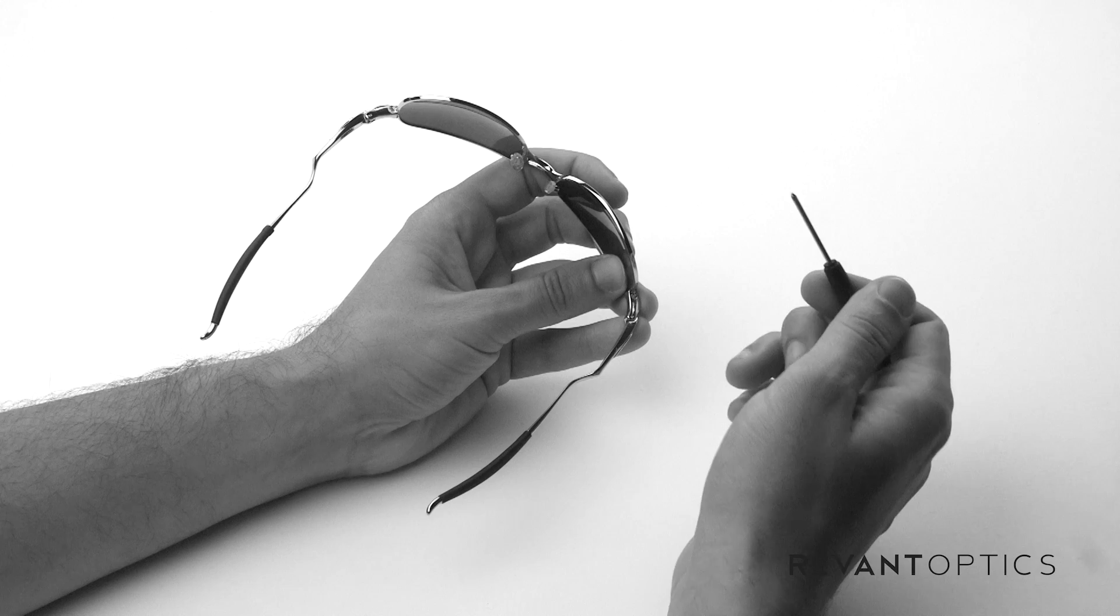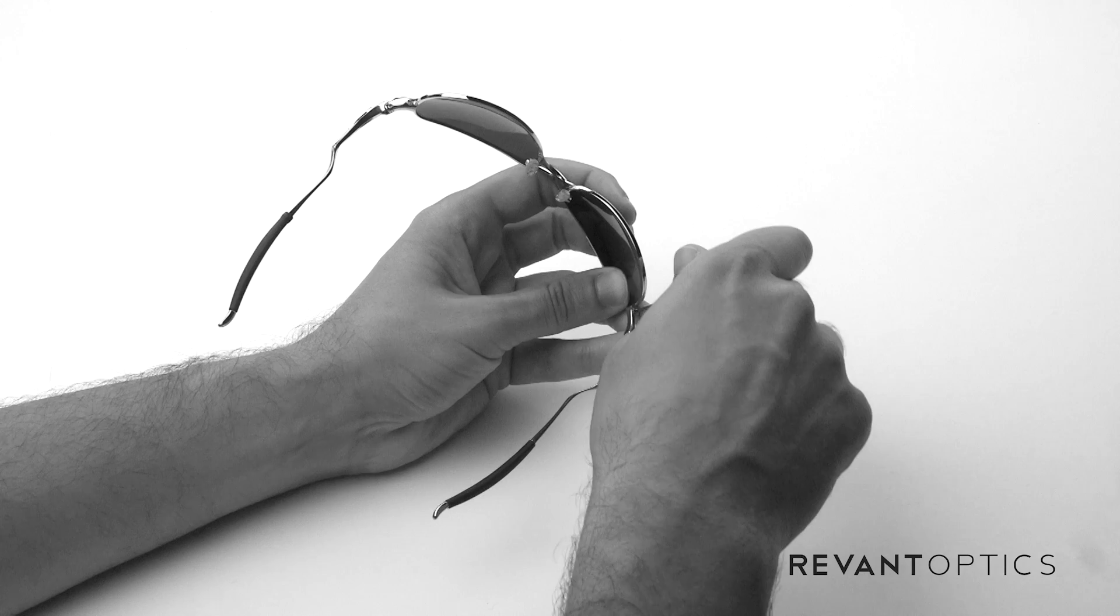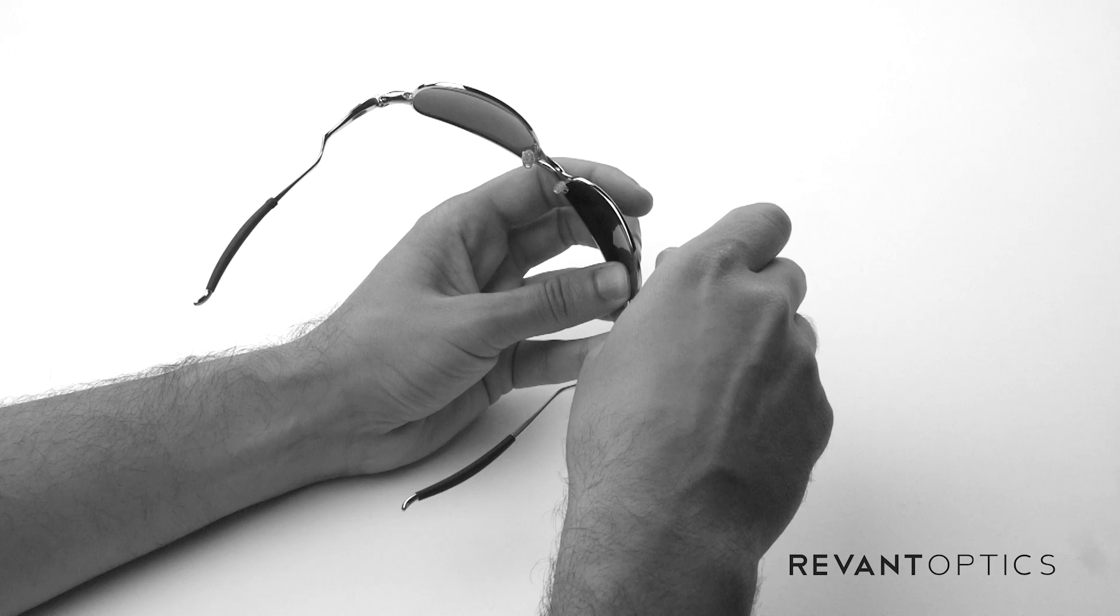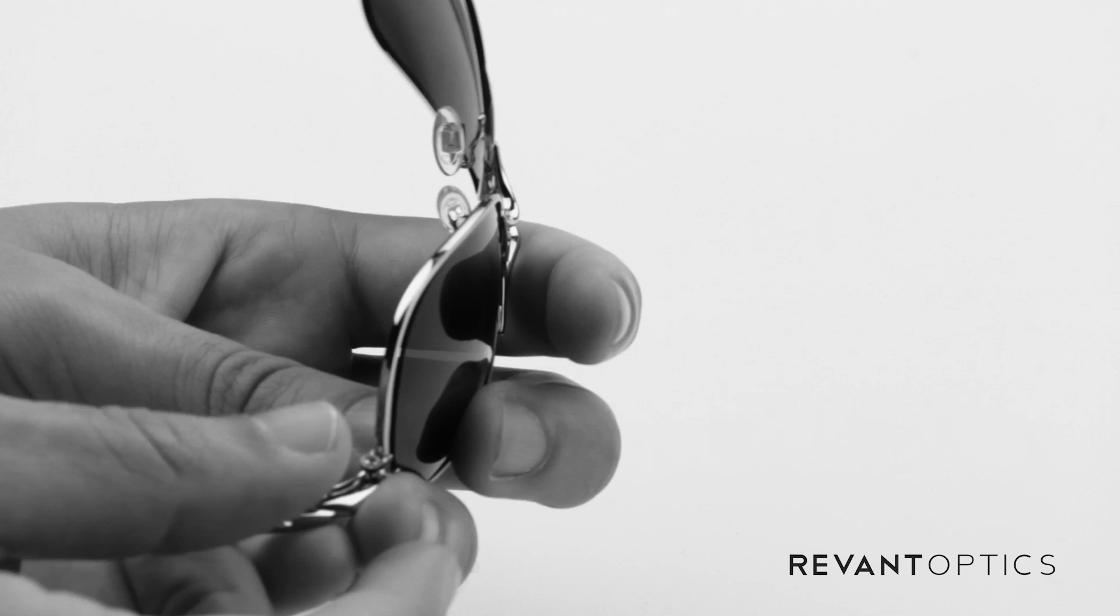So go ahead and start by seating the top of the Phillips head into the screw, make sure it's securely in there. You don't want to strip the screw. Once it is securely in there, apply some pressure to the back side of the screwdriver and then turn to the left. And you'll see that it'll pop right up here.